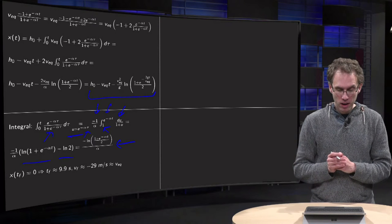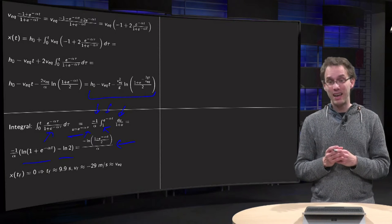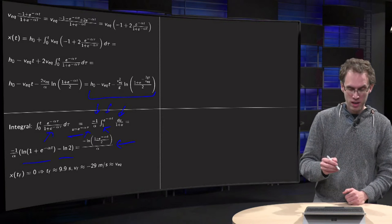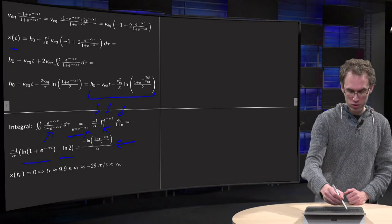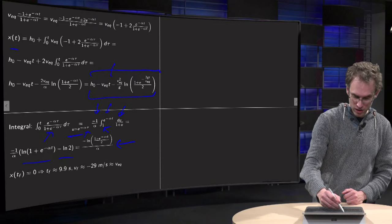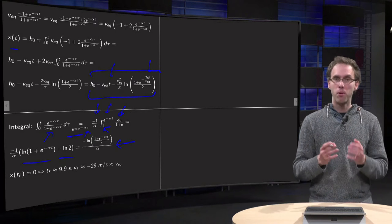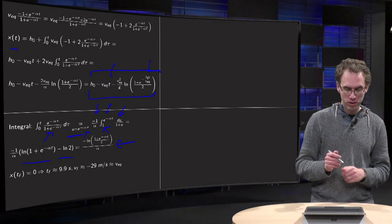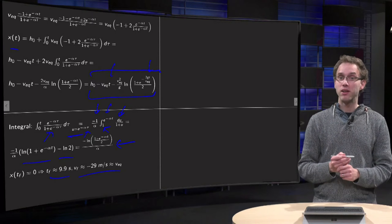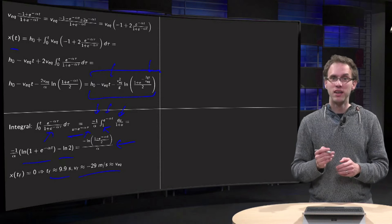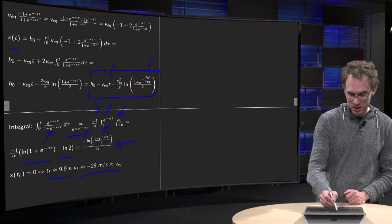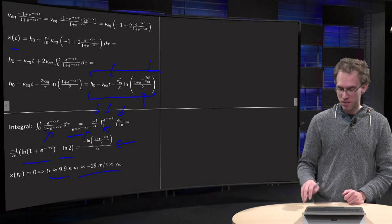This looks like a transcendental equation if you want to solve x(t_final) equals 0: you set the right-hand side to zero and find t, but t appears in multiple places. This looks undoable analytically. If you use a numerical solver you find the final time to be approximately 10 seconds and the final velocity to be minus 29 meters per second. But the nice part — the last trick of this video — is that you can in fact solve this equation analytically as well.